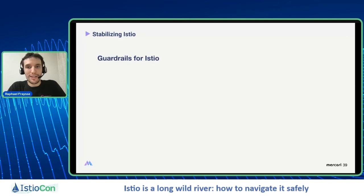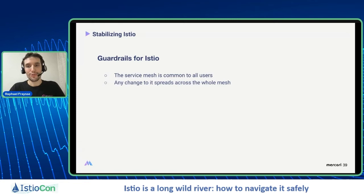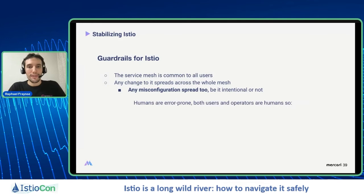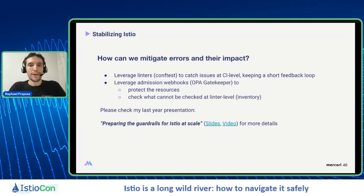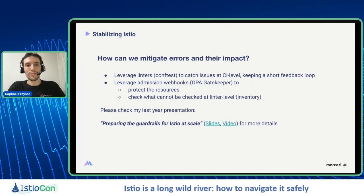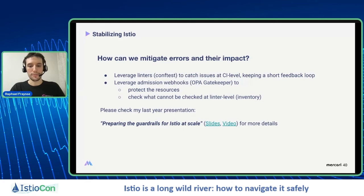The last part of stabilizing Istio is about guardrails. The service mesh is common to all users, and any change to it spreads across the whole mesh — which means any misconfiguration also spreads. Because humans are error-prone, errors will happen with a large blast radius. To mitigate errors, there are two ways. First, leverage linters such as conftest to catch issues at CI level, keeping a short feedback loop. Second, leverage admission webhooks such as OPA Gatekeeper to protect your resources and check what cannot be checked at the internal level, especially the inventory. The source of truth is what is in your cluster at any time.